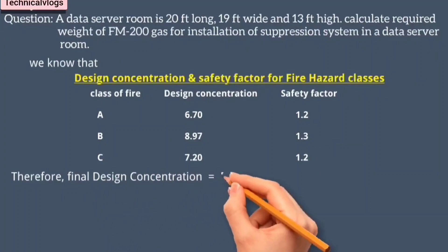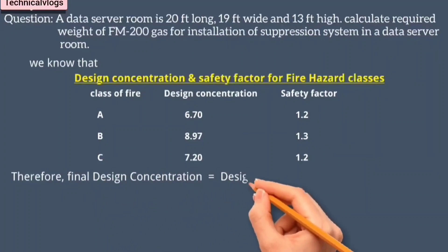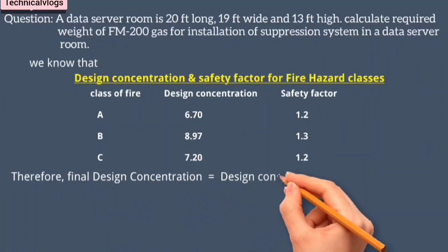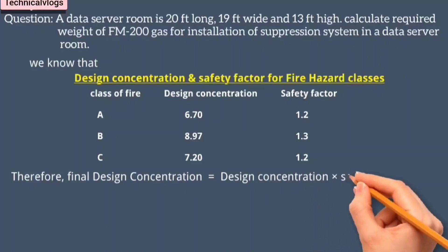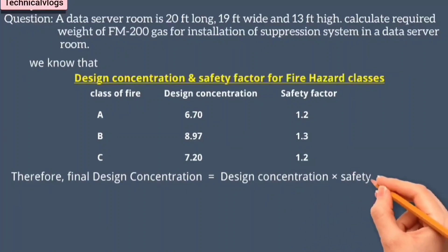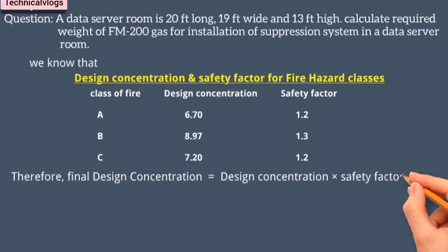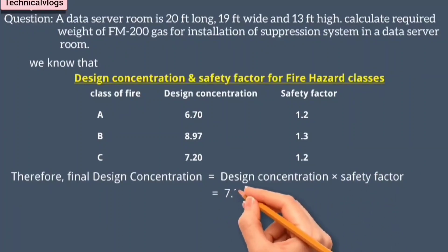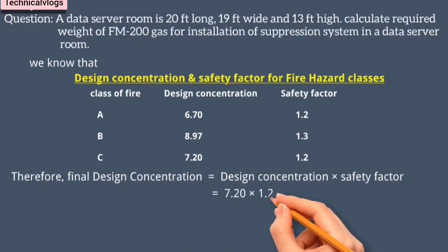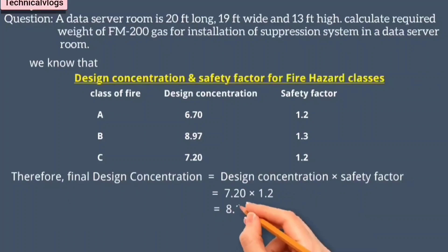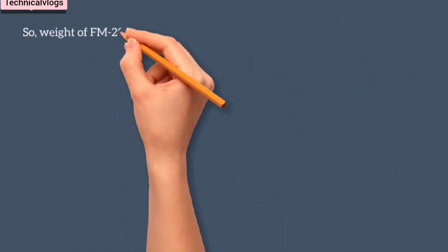Therefore, final design concentration equals design concentration multiplied by safety factor. So we have final design concentration: 7.20 multiplied by 1.2 equals 8.64.